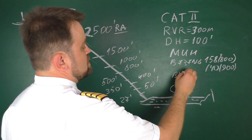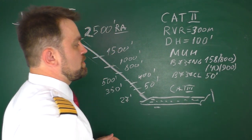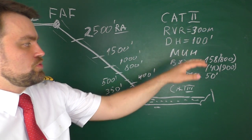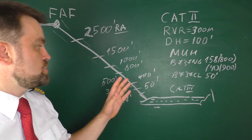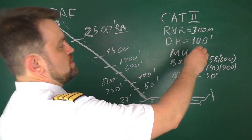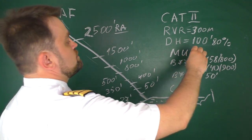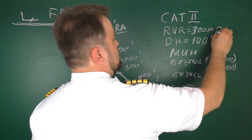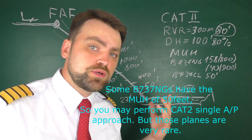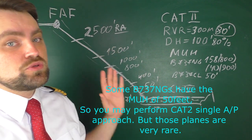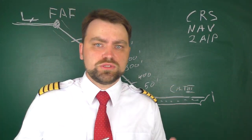For the Boeing 737 NG, the MUAC is 158 feet for the 800 version and 140 feet for the 900 version. For the Boeing 737 Classic, the minimum use height of the autopilot is 50 feet, so you can perform a Category 2 approach with a single autopilot. For the NG, you need two autopilots. However, for Category 2 you can disconnect the autopilot at 80% of the minimum — so with a 100-foot decision height, you can disconnect at 80 feet and land manually.